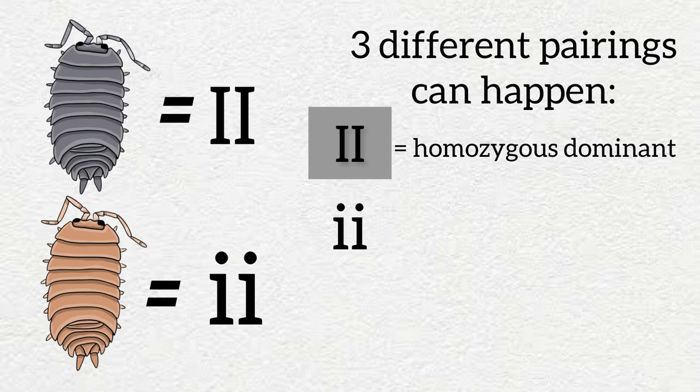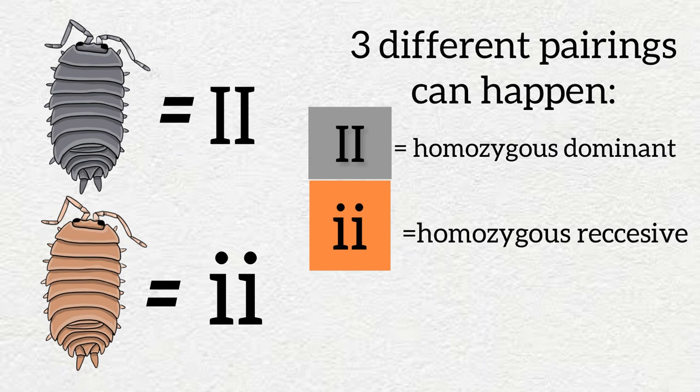There could be two recessive alleles, little i little i, which will make the carapace orange. Individuals with two recessive alleles are called homozygous recessive.